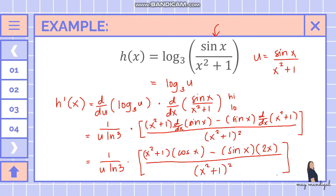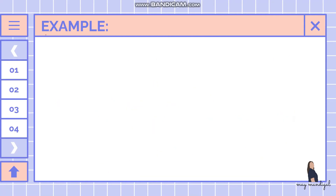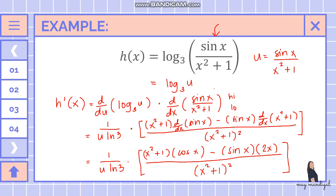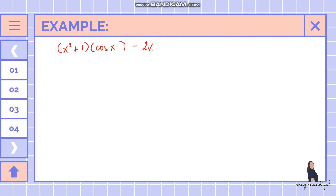Now we simplify by multiplying numerator to numerator and denominator to denominator. The numerator becomes x squared plus one times cosine of x, minus 2x sine of x. The denominator is u ln of three times x squared plus one squared.